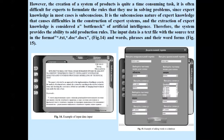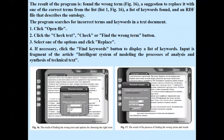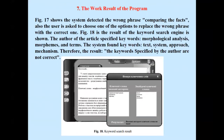The input data is a text file with the source text in the form of TXT or DOC2KX format, along with words, phrases, and their word forms. The result of the program is the found wrong term along with a suggestion to replace it with one of the correct terms from the list, and a list of keywords found in an RDF file that describes the ontology. Figure 17 shows the system detected the wrong phrase by comparing the facts, and the user is asked to choose one of the options to replace the wrong phrase with the correct one. Figure 18 shows the result of the keyword search. The author of the article specified keywords: morphological analysis, morphemes, and terms. The system found keywords: text, system, approach, mechanisms.